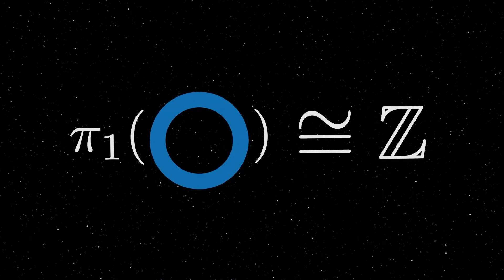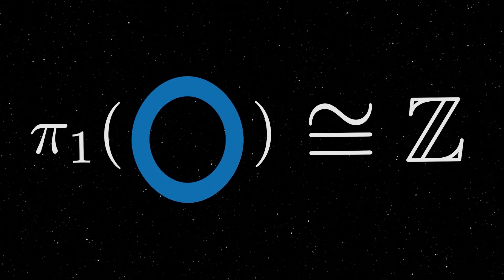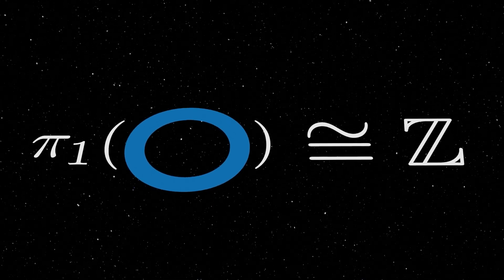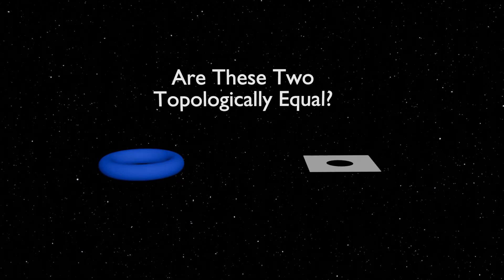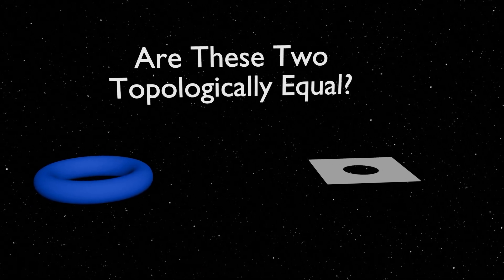This algebraic structure is an invariant of your space, meaning that no matter how much you continuously stretch and deform your space, it will still have the same fundamental group. This is one of the many tools that topologists use to differentiate between different topological spaces.